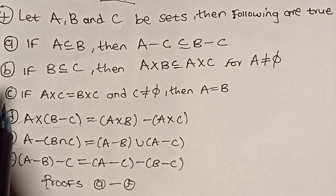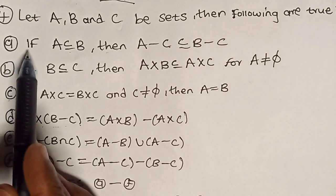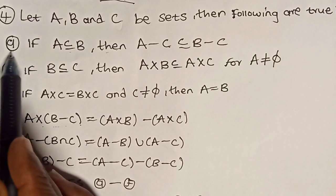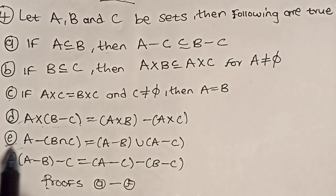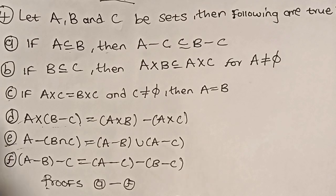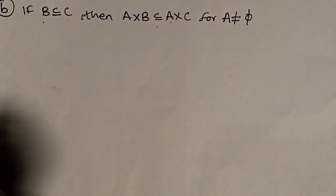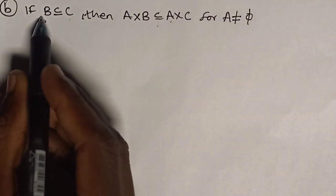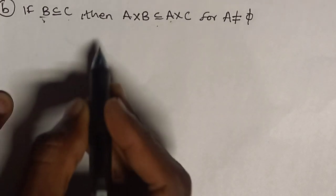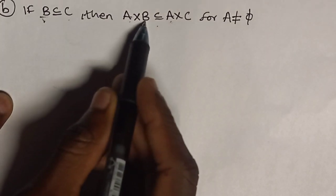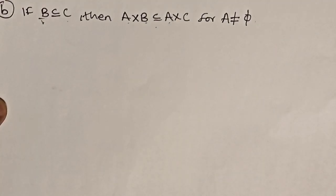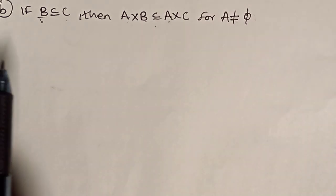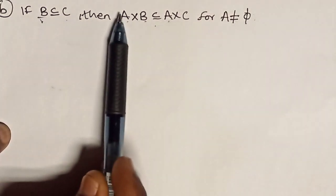Proceeding where we stopped, we did the first one already. Now we are going to do parts B through E — F will be done later in an upcoming video. For part B, we have to show that if B is a subset of C, then A cross B is a subset of A cross C, for A not empty. First thing first, we'll have to assume that B is a subset of C.